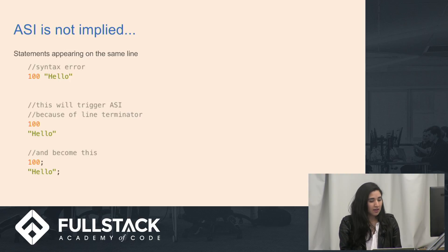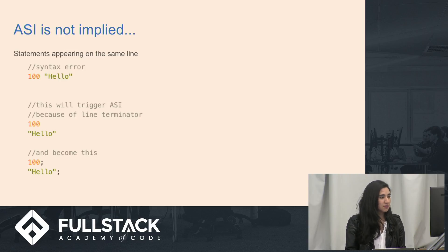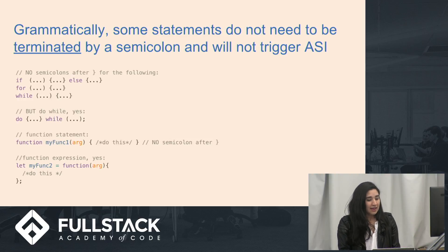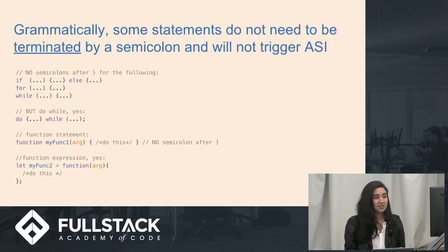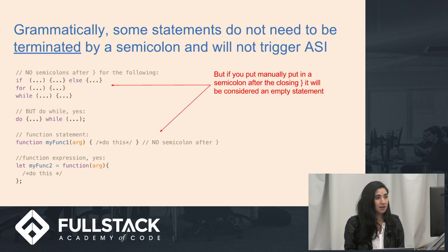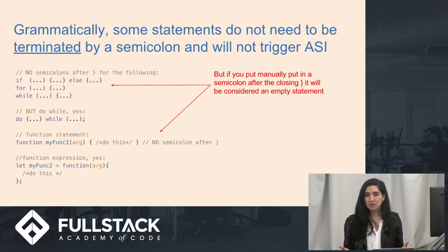ASI is also not implied when statements appear on the same line — you'll get a syntax error. Grammatically, some statements do not need to be terminated by a semicolon and will not trigger ASI: if-else statements, for loops, while loops, and function statements do not need semicolons. Do-while loops and function expressions do need a semicolon afterwards. But if you do put a semicolon after one of those that technically don't need one, it'll just be interpreted as an empty statement and won't hurt your code.